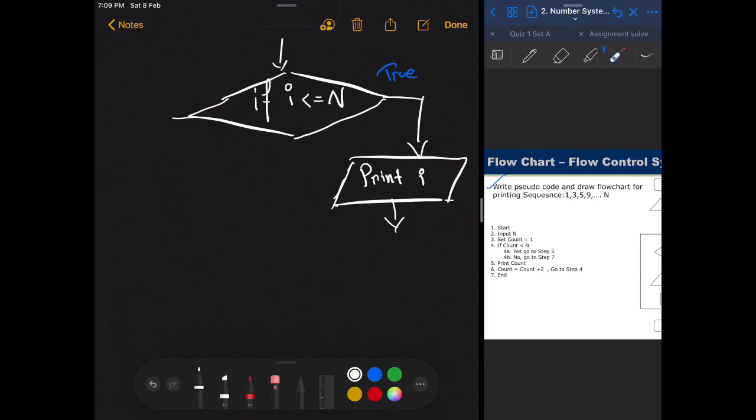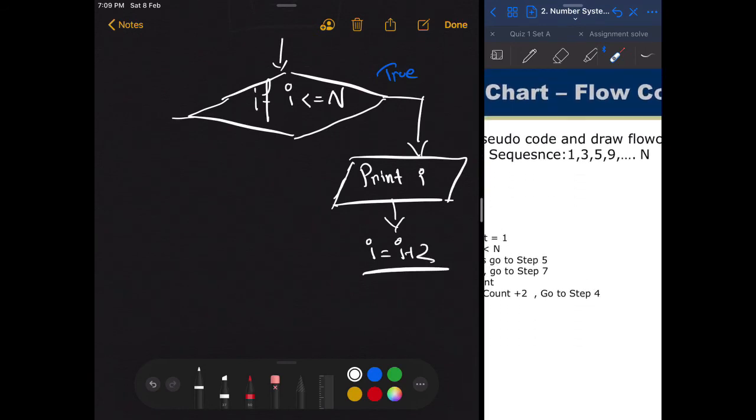Then we are going to increase the value of i by 2, because in the example here we can see that the value is increasing by 2. So after 1 we have 3, then 5. So 1 plus 2 that would be 3, 3 plus 2 that would be 5. This is what we are basically doing here. So as this is a calculation, we are going to put this into a rectangle.